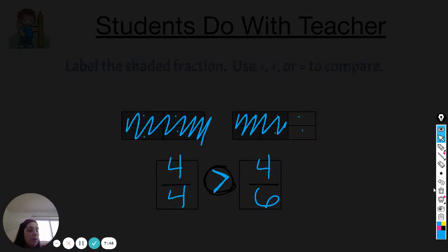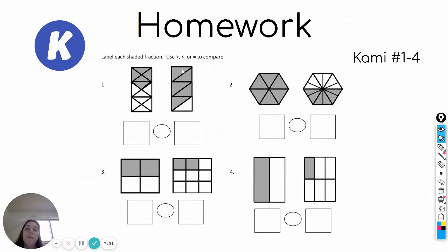Let's take a look at what you're going to be working on for homework today. It's Kami. You're going to be doing numbers one through four, which is all of these here. Label each shaded fraction, use greater than, less than, or equal to to compare. So just like what we did, you're going to go through and label the fractions. Make sure you pay attention because your numerator should be the same.